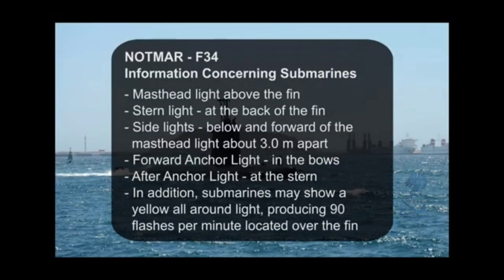Notmar F-34, Notices to Mariners, Foxtrot 3-4 — information concerning submarines. Masthead light above the fin. Stern light at the back of the fin. Side lights below and forward of the masthead light, about 3 meters apart. Forward anchor light in the bows, after anchor light at the stern. In addition, submarines may show a yellow all-around light producing 90 flashes per minute, located over the fin.